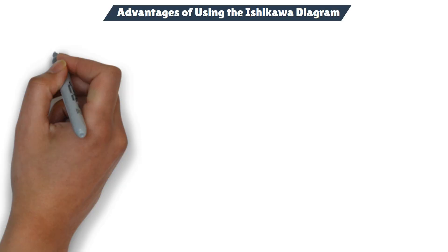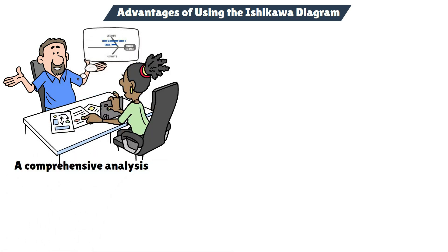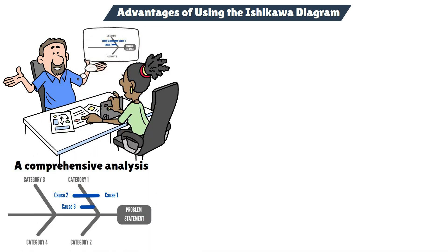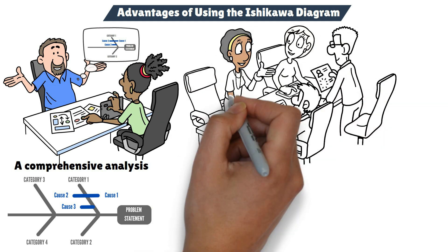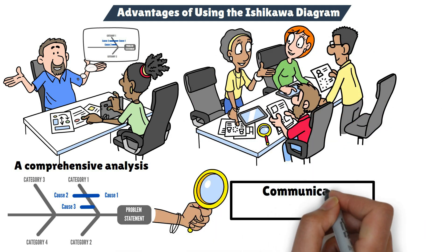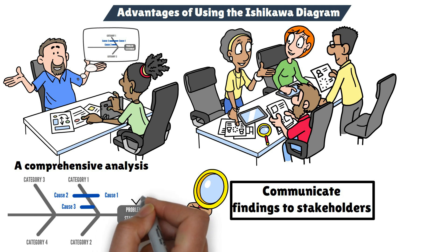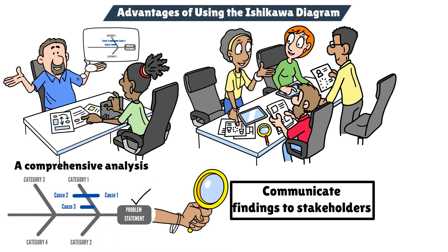What makes this diagram so powerful is its ability to provide a comprehensive analysis. It encourages teams to explore all possible causes in a structured way. Plus, it visually organizes these causes, making it easier to communicate findings to stakeholders. Most importantly, it keeps the team focused on the root cause of a problem, ensuring that you're addressing the issue at its core, rather than just putting out fires on the surface.